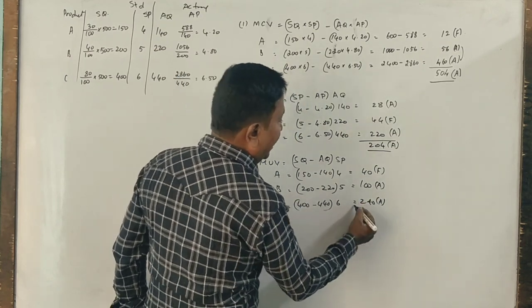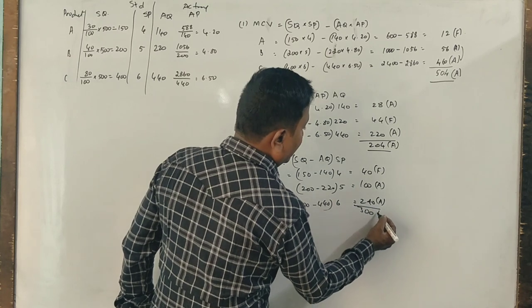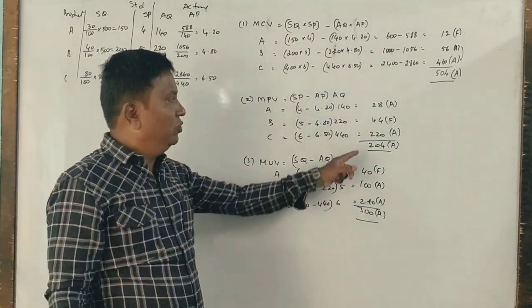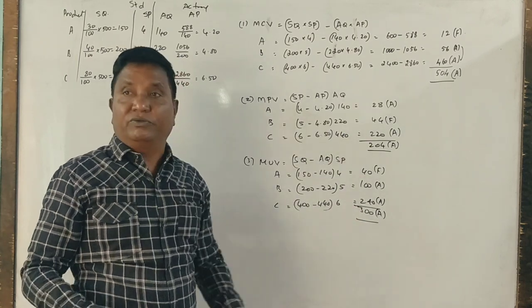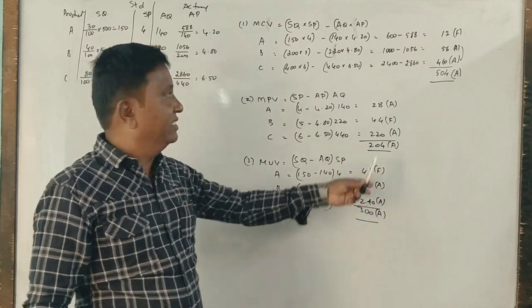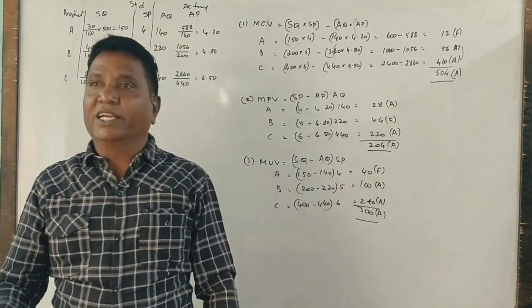So all together 300 adverse. 204 plus 300 is 504. The numbers are correct.